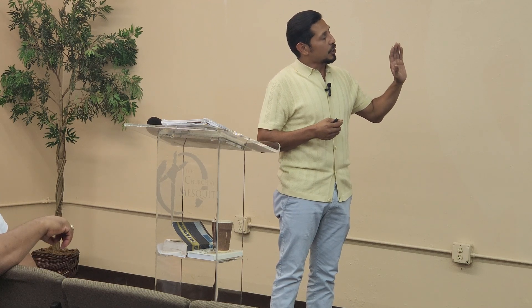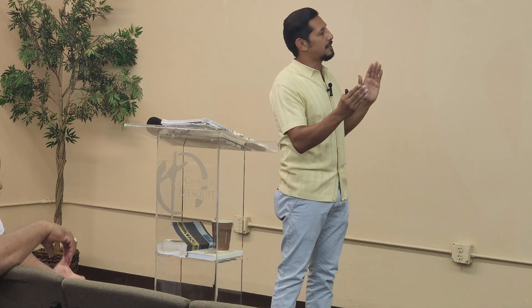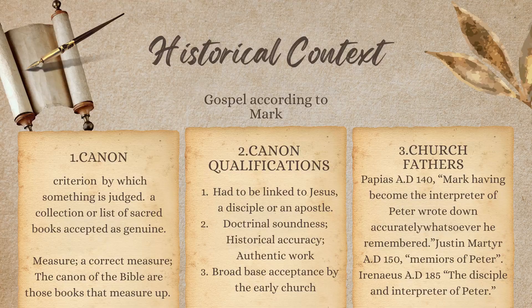The gospel, the euangelion, the good news is part of a canon in the New Testament. The canon is a criterion by which something is judged — a collection of sacred books accepted as genuine. In short, it means a correct measure. The canon of the Bible are those books that measure up. Before all these books made it into what we know as the canon, there were other things being taught — other oral lessons, other things in circulation about Christ and the apostles.